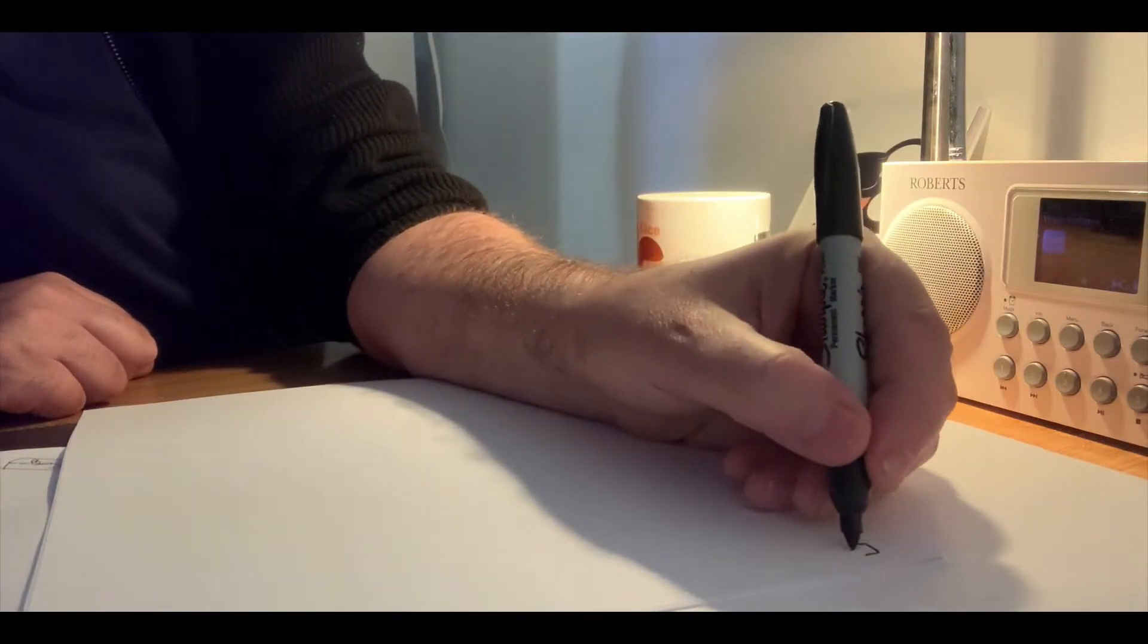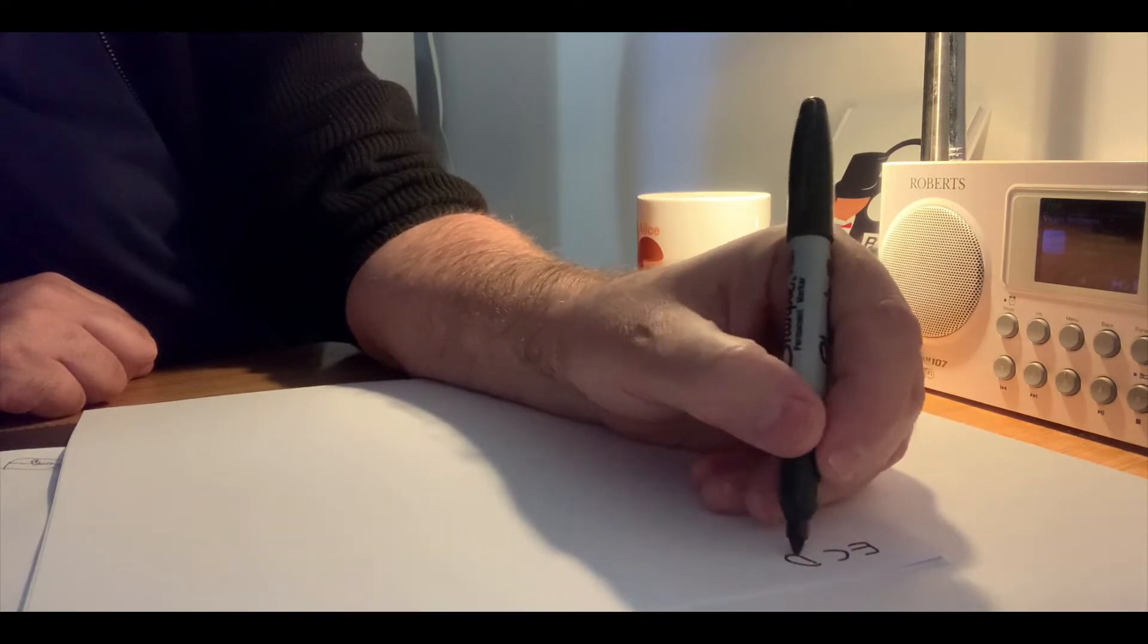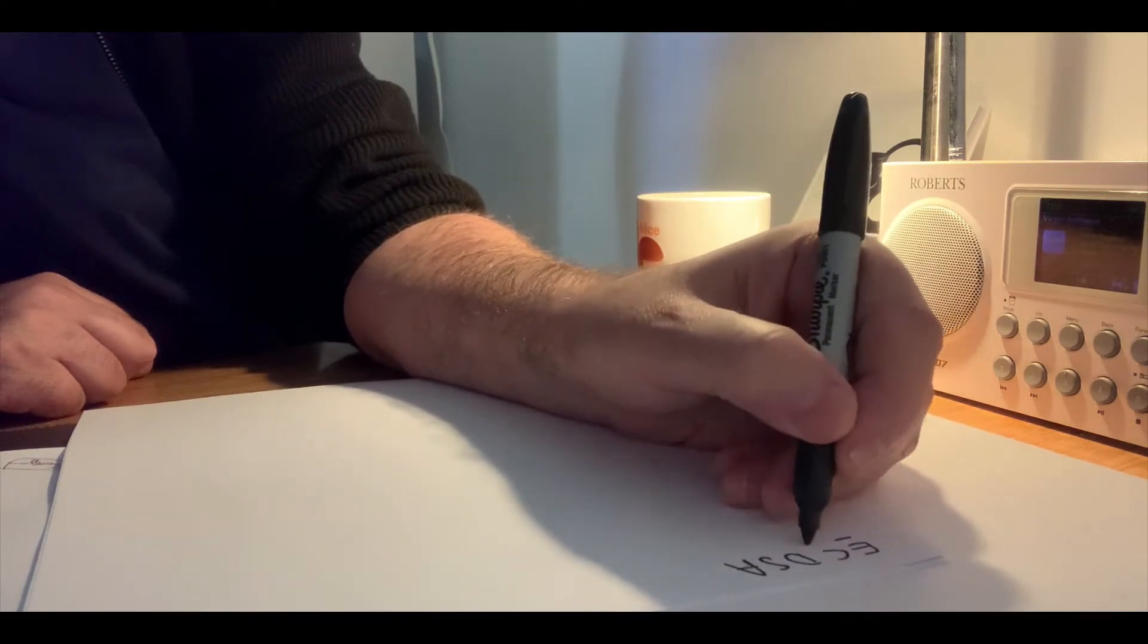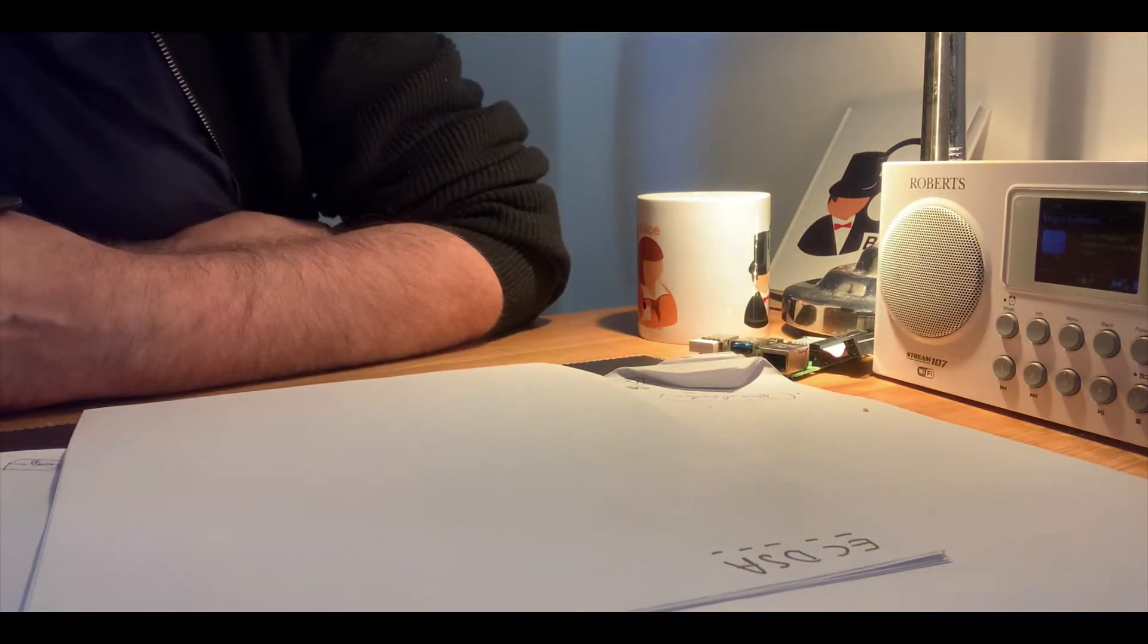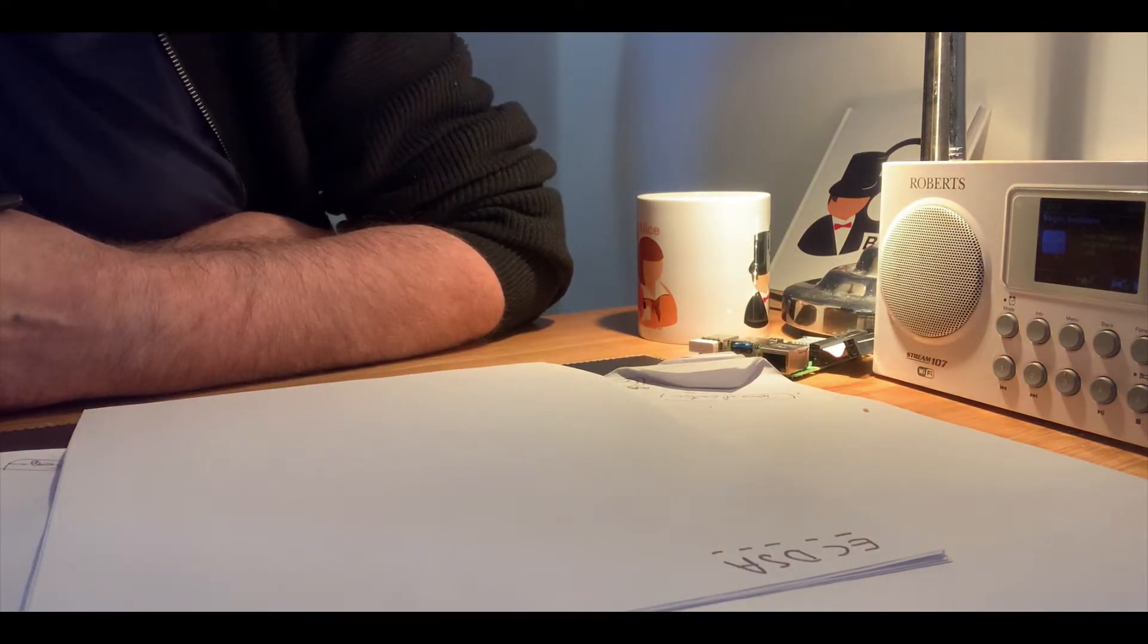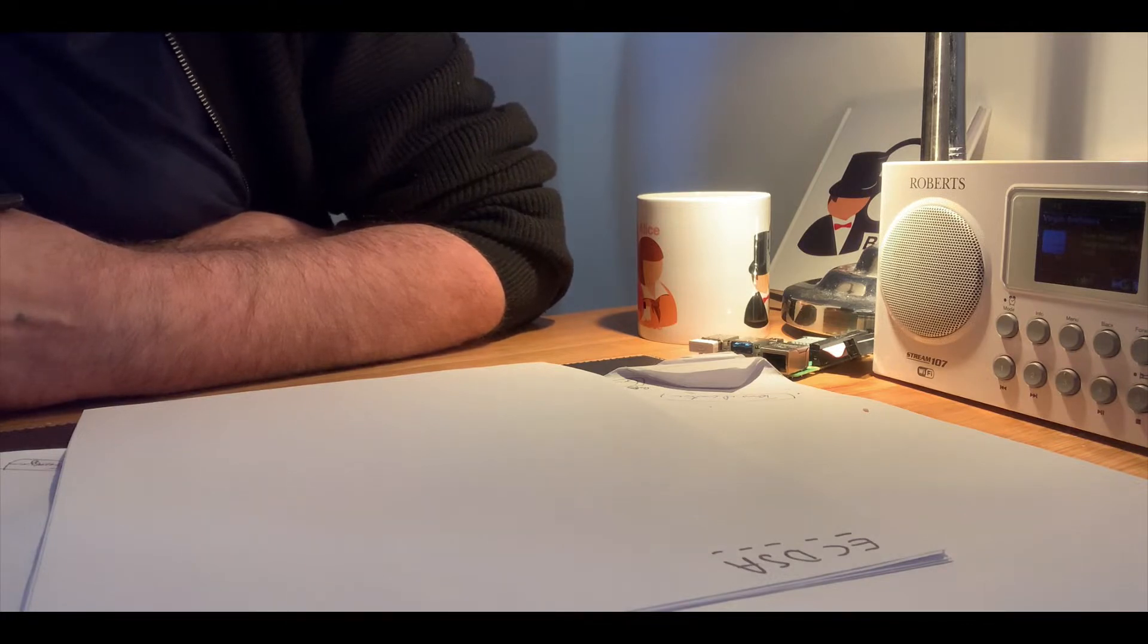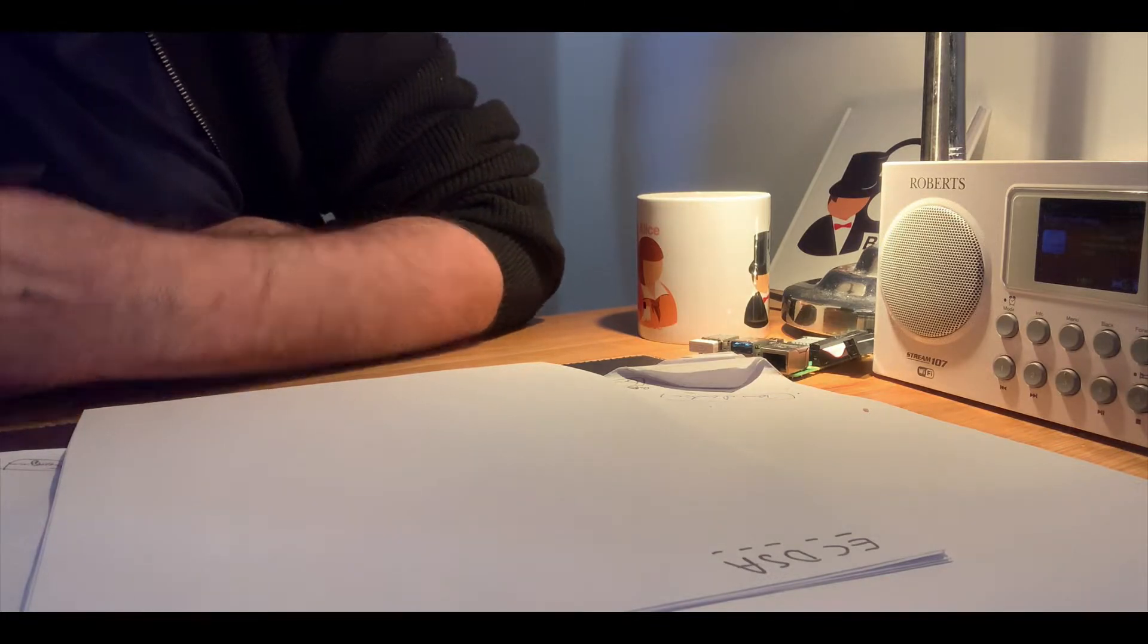Okay, so let's look at ECDSA, or Elliptic Curve Digital Signature Algorithm. This is the method that's used in techniques such as Bitcoin to provide signatures that a transaction is valid.